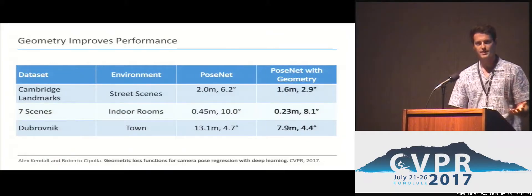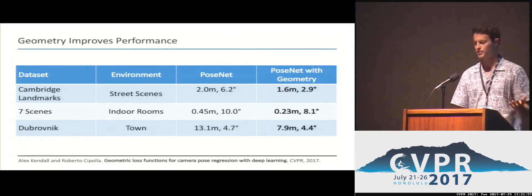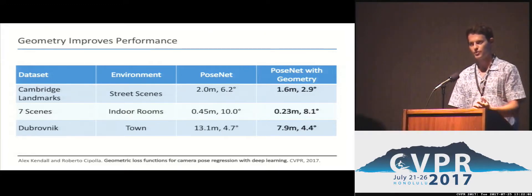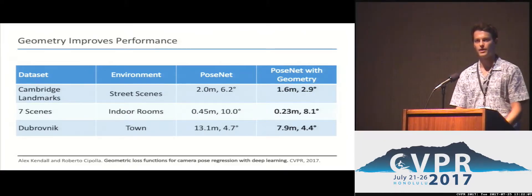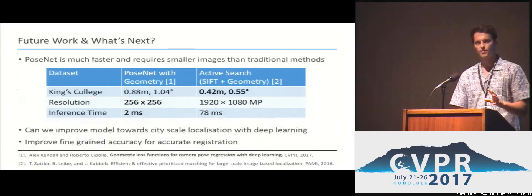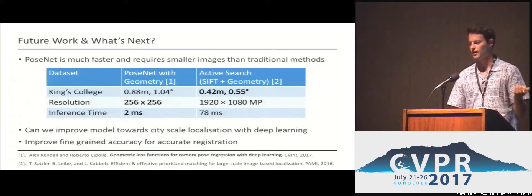Across all three datasets we show that training with the geometric reprojection loss improves over the simple regression PoseNet baseline, and we significantly improve performance — perhaps not quite enough for fine-grained localization accuracy, but it's a clear advancement over the naive regression model. When comparing to SIFT-based registration, we're not quite at the accuracy of state-of-the-art methods such as the one shown here.